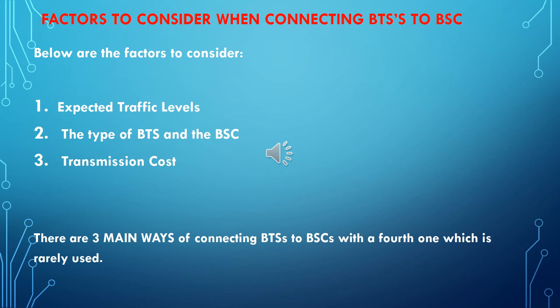You also need to consider the type of BTSs and BSCs you are going to use on the 2G RAN network. The third factor is the cost of transmission — how much is going to be involved in purchasing transmission media like E1s. So the three steps are: expected traffic levels, type of BTS and BSC, and transmission cost.